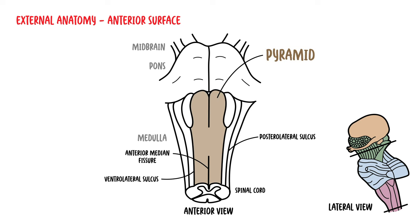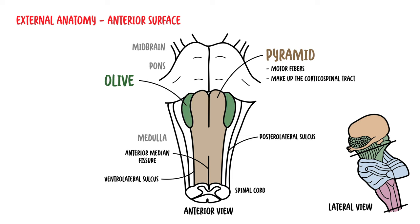The pyramids are composed of bundles of motor fibers which make up the corticospinal tract. The olives also appear as a pair of swellings, similar to the olives you eat. They are located lateral to the pyramids and contain the olivary nuclei, which play an important role in movement coordination and movement-related learning.